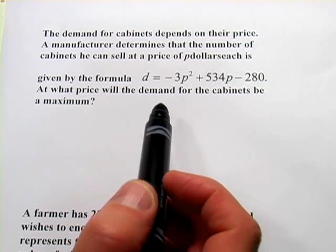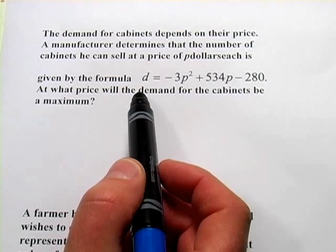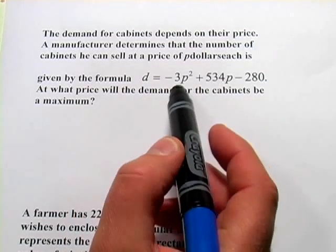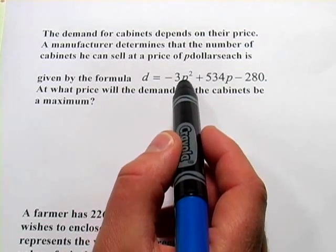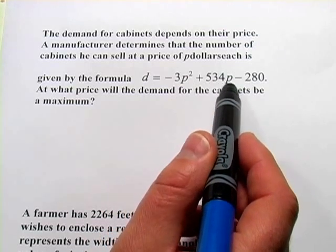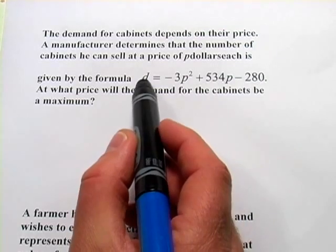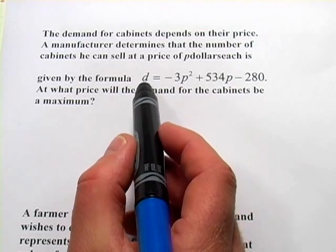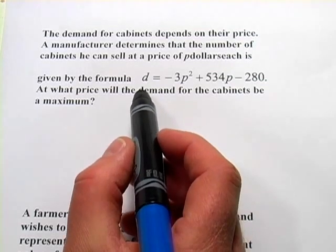In this first one we have a formula for the demand for a product that's based on its price. It's been found that negative 3 times the price squared plus 534 times the price minus 280 is the function for the demand.